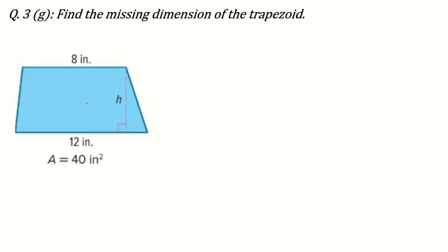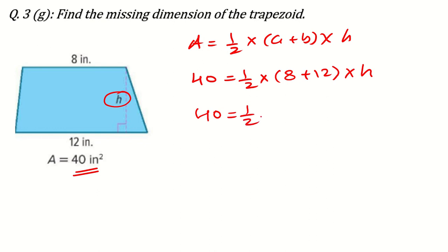Now, next is, find the missing dimension of the trapezoid. See, question is same, formula is same, just only this time height is missing. So, let's write the formula first. A is equal to half of A plus B times H means value of area is, see it is given here, 40 is equal to half of A plus B. It is 8 plus 12 times H because we don't know the value of H. Half of 12 plus 8, 20, multiply by H. 20 divided by 2 is 10. So, H is equal to 40 divided by 10 means 4 inches. So, this is the height. I am sure you have understood this question also.